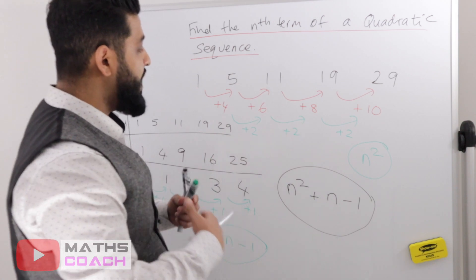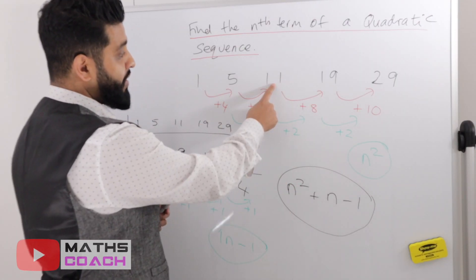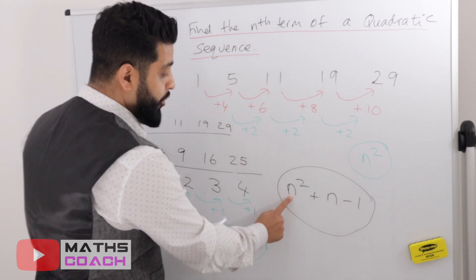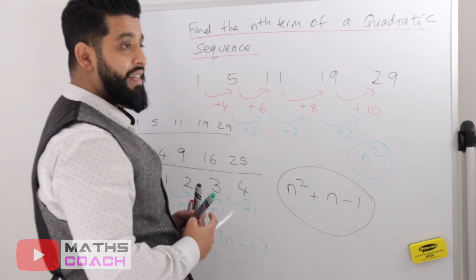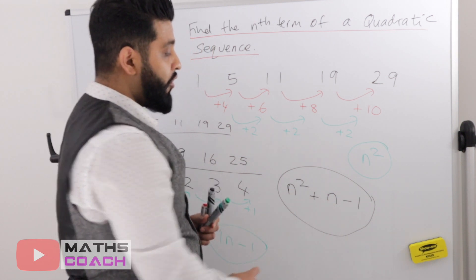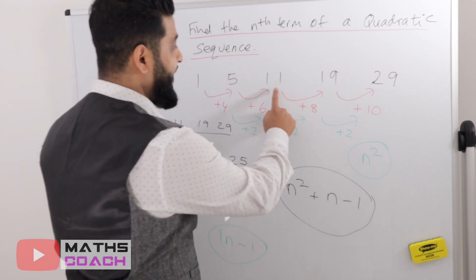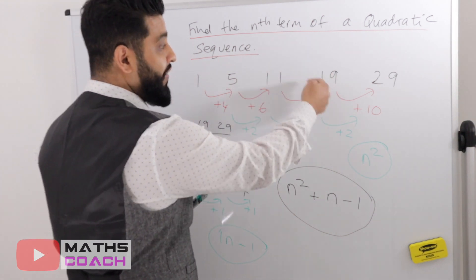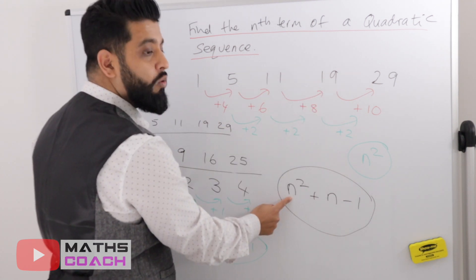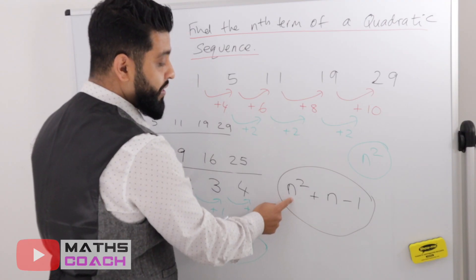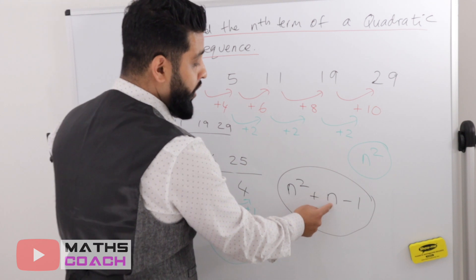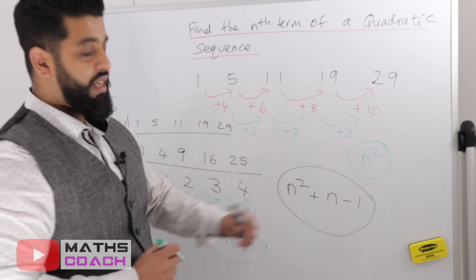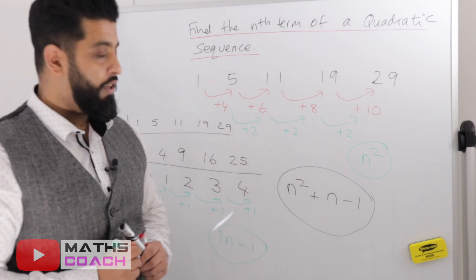Now merge both parts together: n squared plus n minus one — that is the rule. You have to test it. Taking the third term, n equals 3: 3 squared is 9, plus 3 is 12, minus 1 is 11. For the fourth term, n equals 4: 4 squared is 16, plus 4 is 20, minus 1 is 19. Both correct.